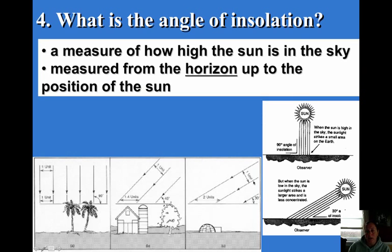So the angle of insulation is a measure of how high the sun is in the sky. And we measure this from the horizon up to the position of the sun. So if you put your one arm straight out in front of you, that would be your horizon. And if you put your other arm up pointing at the ceiling, that would be a 90 degree angle that the sun would be coming down at. Where if you then lower your top arm down, it would show how the angle is slanted compared to the horizon or the surface of Earth.